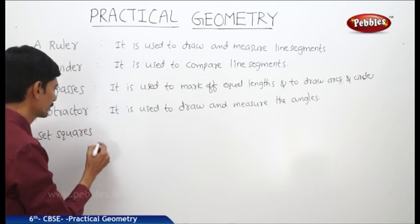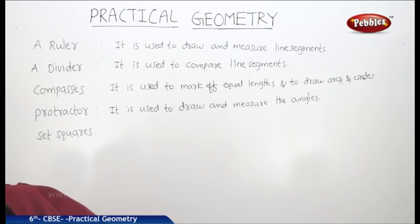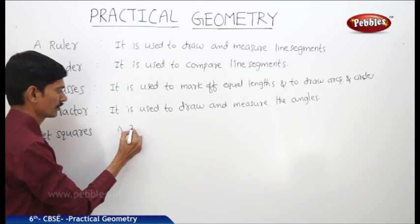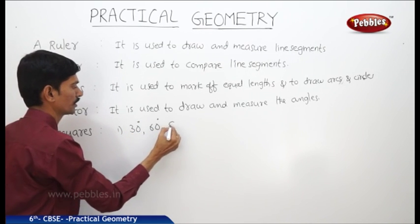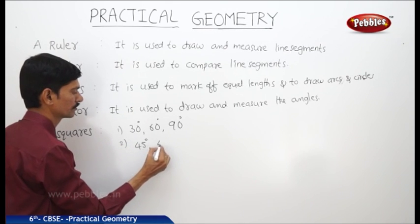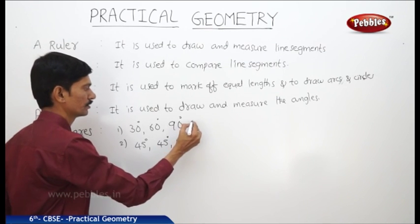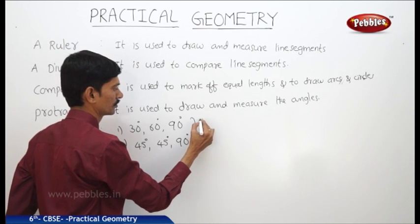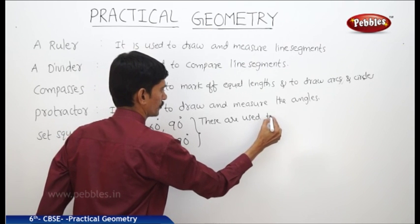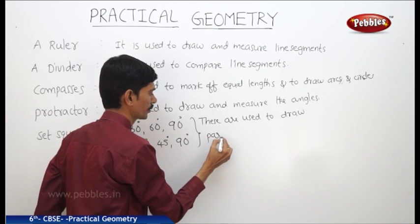Next one, set squares. In your geometry instrument box, we have two set squares. One is 30 degrees, 60 degrees, 90 degrees set square, and the other is 45 degrees, 45 degrees, 90 degrees set square. These are used to draw parallel lines and perpendicular lines.